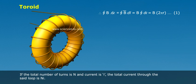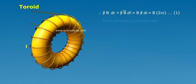If the total number of turns is N and current is I, the total current through the loop is N I. From Ampere's circuit law,